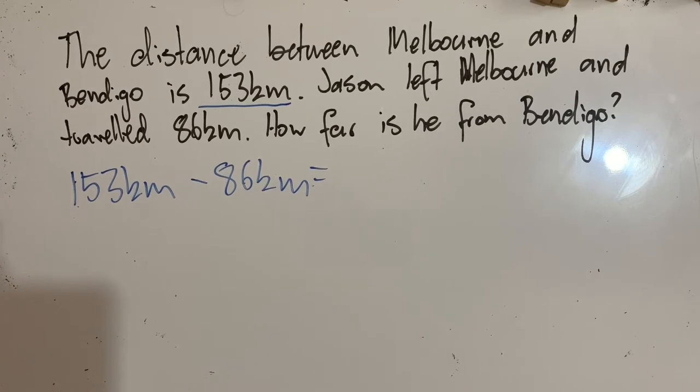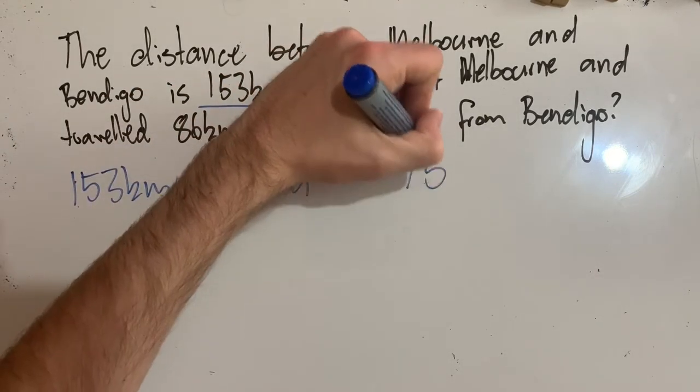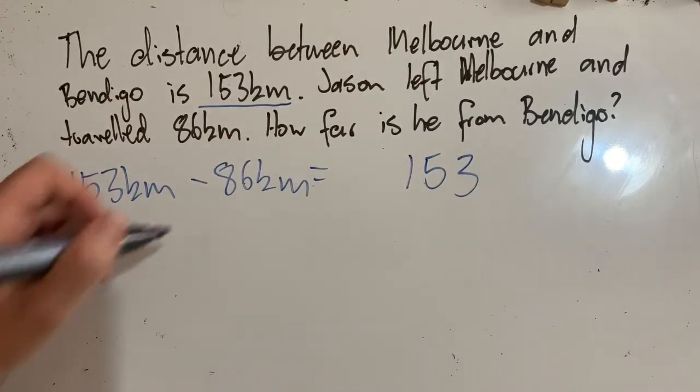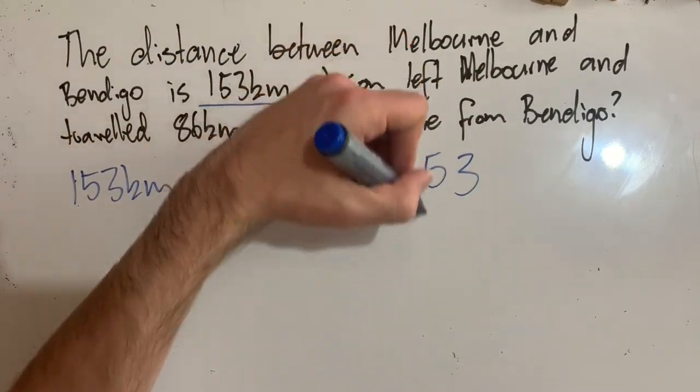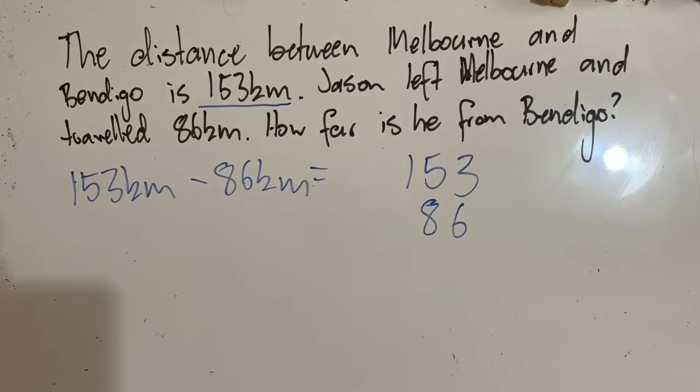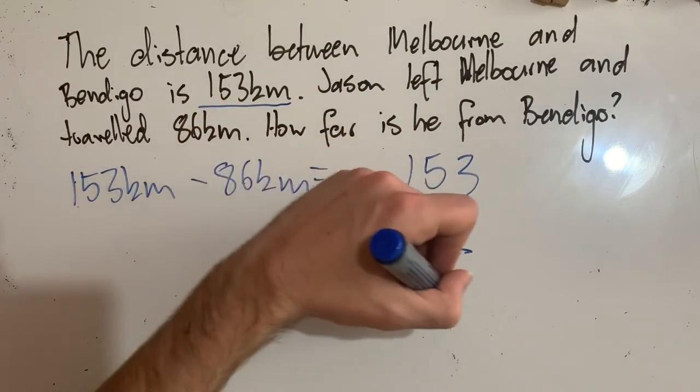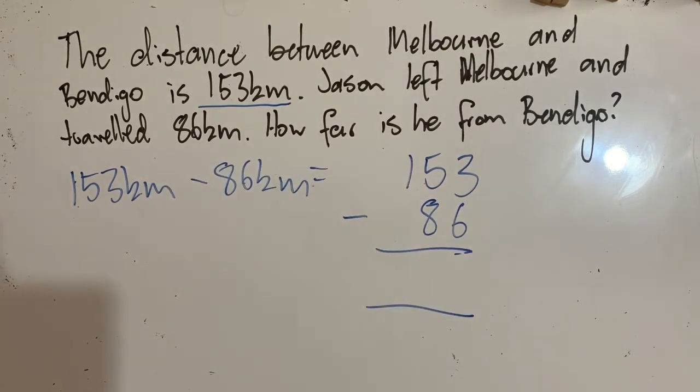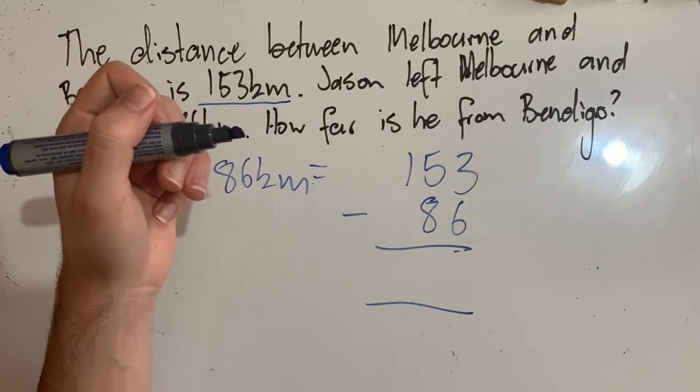Let's work out how we're going to do this. So the number we're starting is 153 and we want to take away 86. Now we need to line up our columns. So our tens column, because we've got 86 there. Now we need to make sure we've got our subtraction sign there so we know what we're doing.